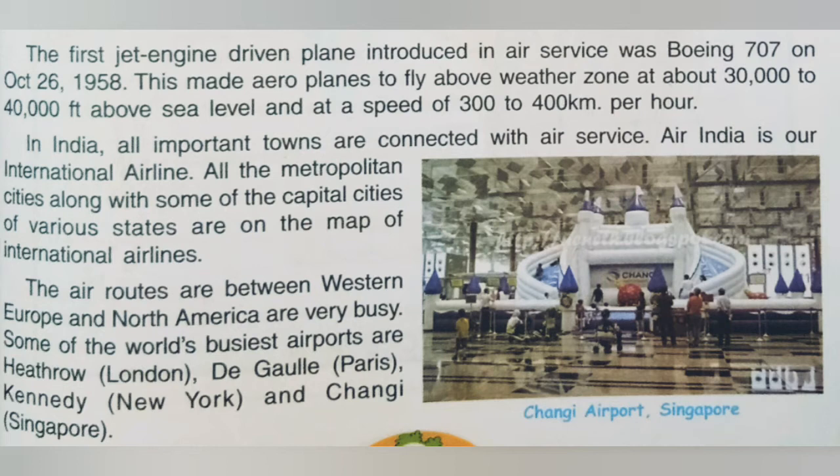In India, all important towns are connected with air service. Air India is our international airline. All the metropolitan cities along with some of the capital cities of various states are on the map of international airlines. India mein sabhi important towns ko air service ke liye connect kiya gaya hai. Air India humari international airline hai, jo doosre deshon ko Bharat se connect karti hai. All metropolitan cities ke saath saath other states ki capitals ko bhi international airline joD ti hai.